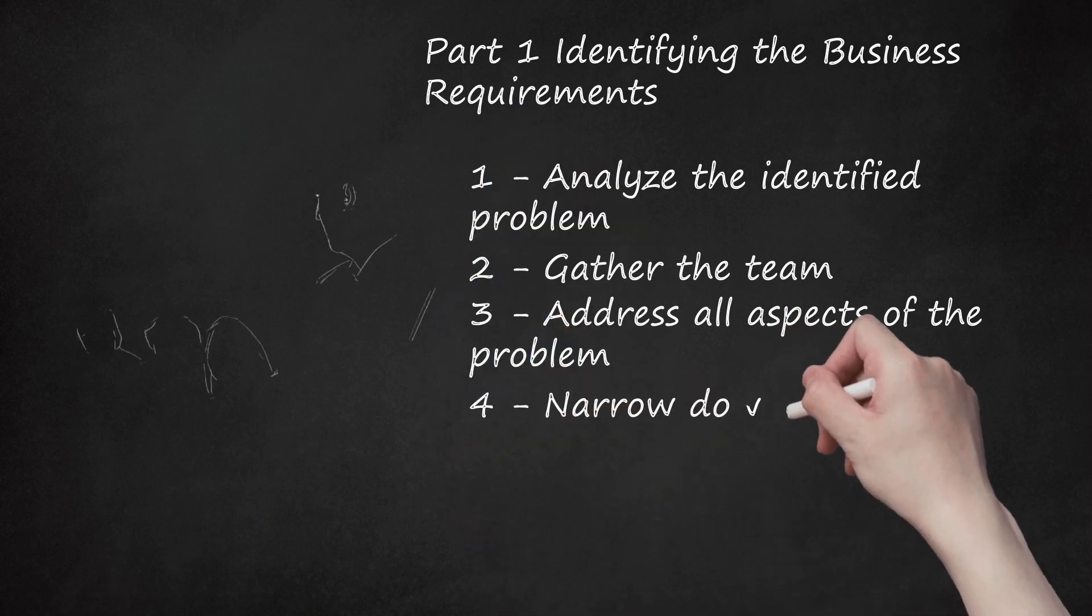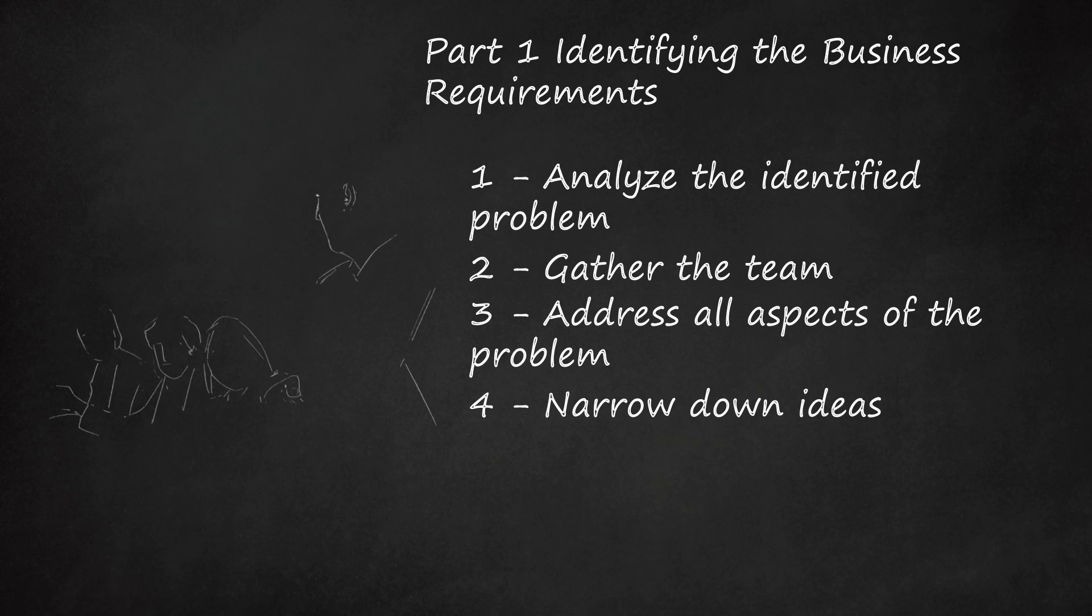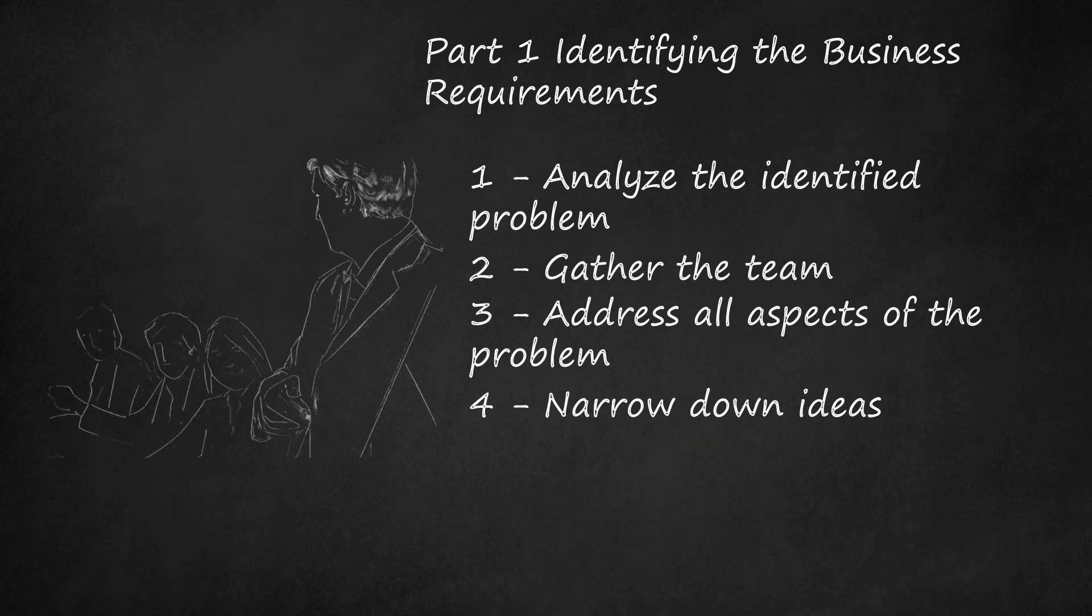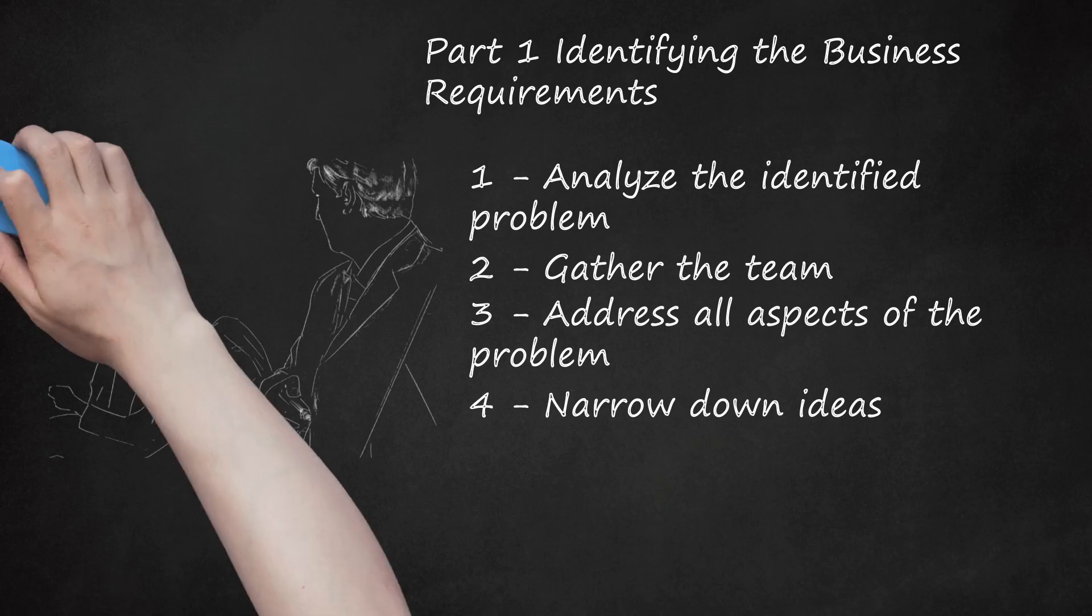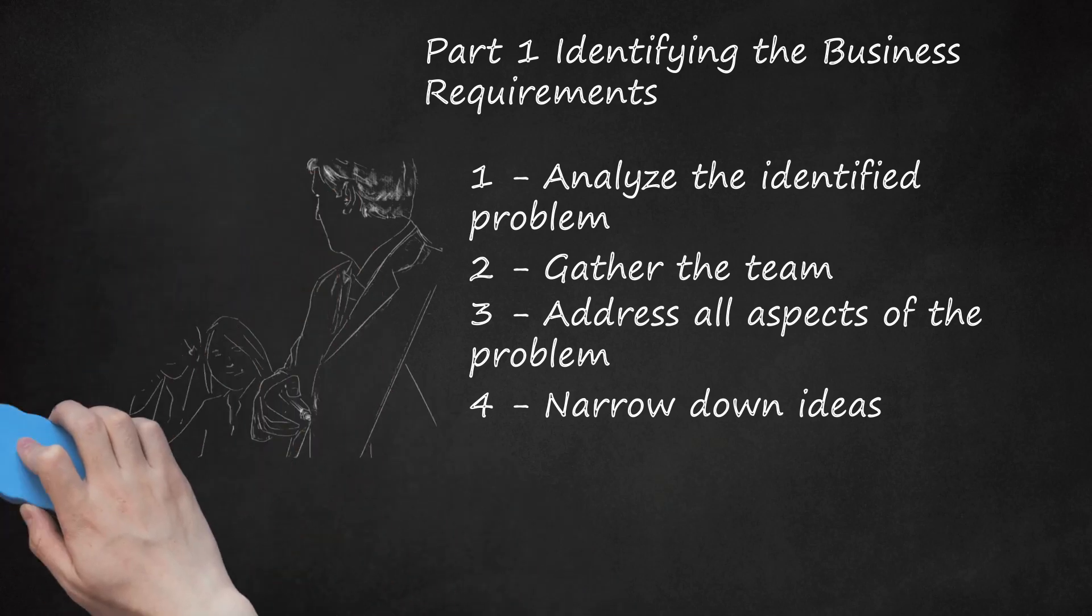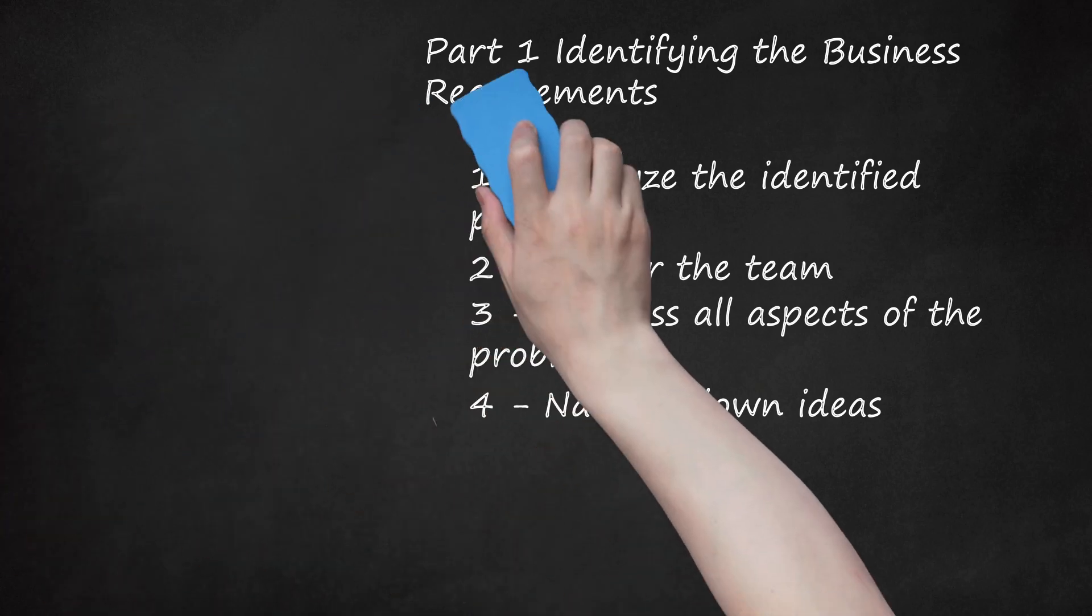Step 4: Narrow down ideas. Once you've brainstormed, it's time to narrow down your solution. Discuss which of the solutions seem like the best one. Basically, you're going to decide what your company is going to do to solve the problem. Maybe you've decided you want to return to some of your original designs with some updates.